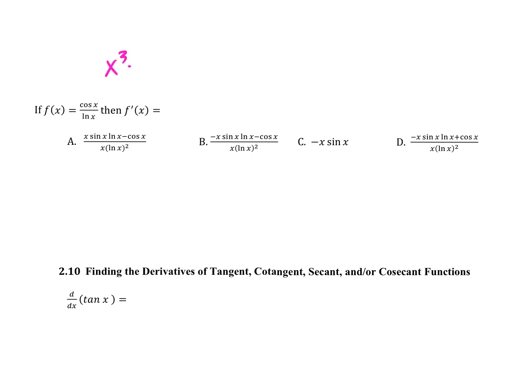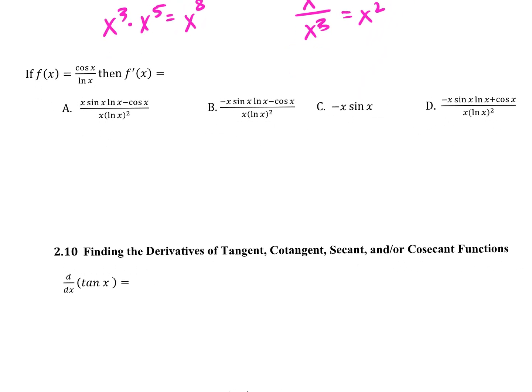Let's talk about why quotient rule uses subtraction. Anyone remember what X cubed times X to the fifth is? X to the eighth. What's X to the fifth divided by X to the third? X to the second. So what did you do with your exponents when you were multiplying? You added your exponents. What were we doing when we were dividing? We subtracted. That's why quotient rule has the minus sign in it.